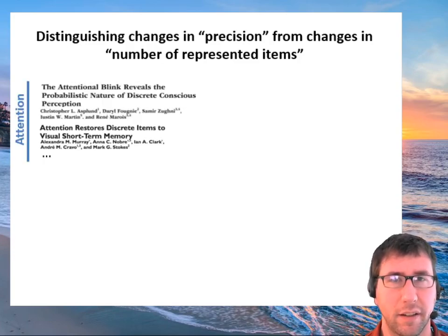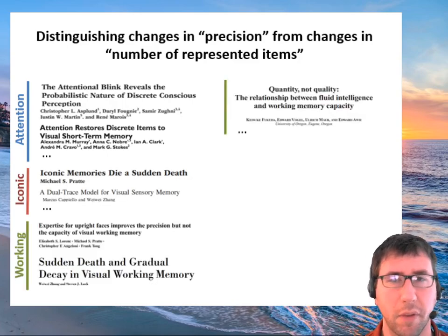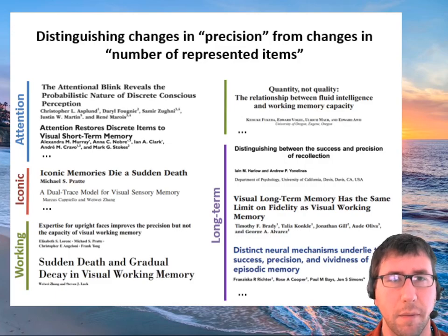There are hundreds of papers across many fields that make use of this idea that we can distinguish precision from number of represented items, including claims that consciousness is discrete because guess rate changes, claims in iconic memory, all over working memory including relationships to intelligence, and long-term memory.